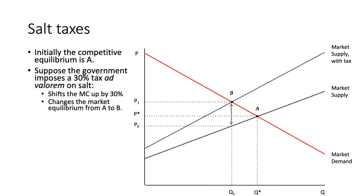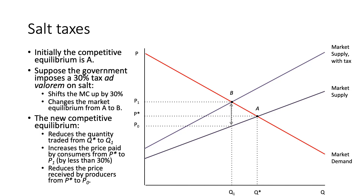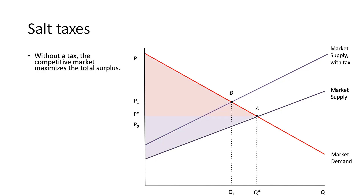Following the shift from point A to point B, we can examine the different impacts. On the X-axis, the quantity traded is reduced from Q* to Q1. On the Y-axis, the price paid by consumers increases from P* to P1 — in this case by less than 30%. The price received by producers falls from P* to P0. When we had the competitive equilibrium we maximized total surplus, but implementing this tax and shifting to point B reduces both consumer and producer surplus.